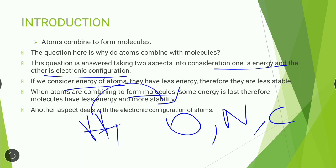Second, based on electronic configuration: atoms that are unstable — meaning those lacking a full octet in their outermost orbit — will try to attain octet configuration. To attain this configuration, they form molecules by combining with other atoms.